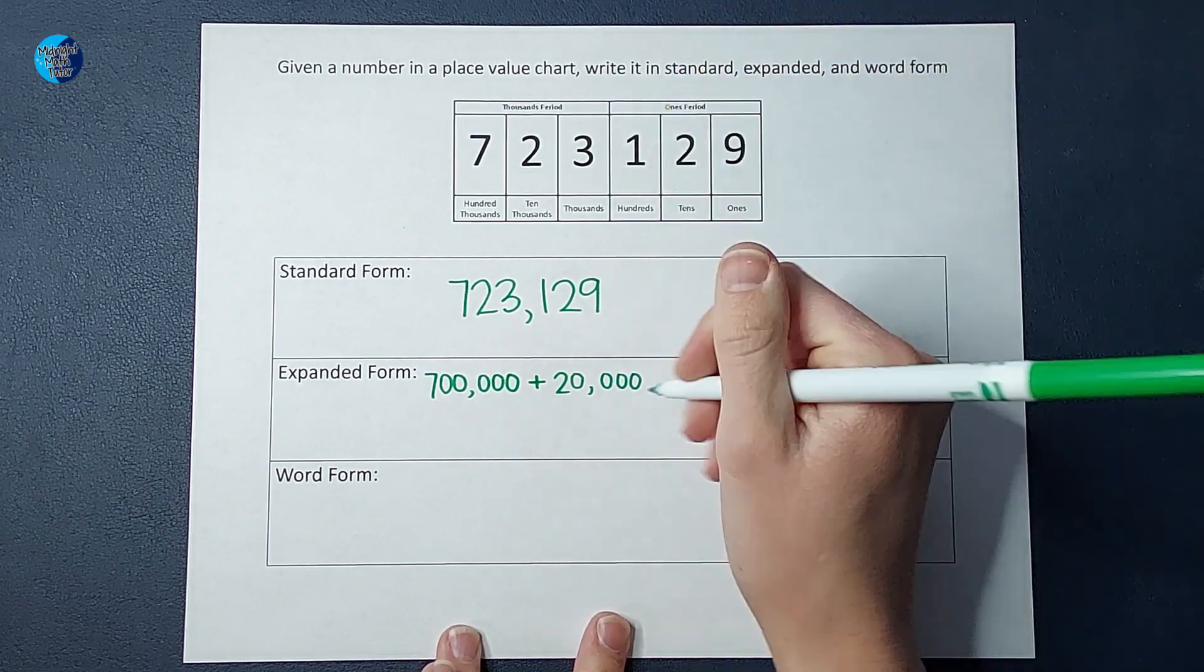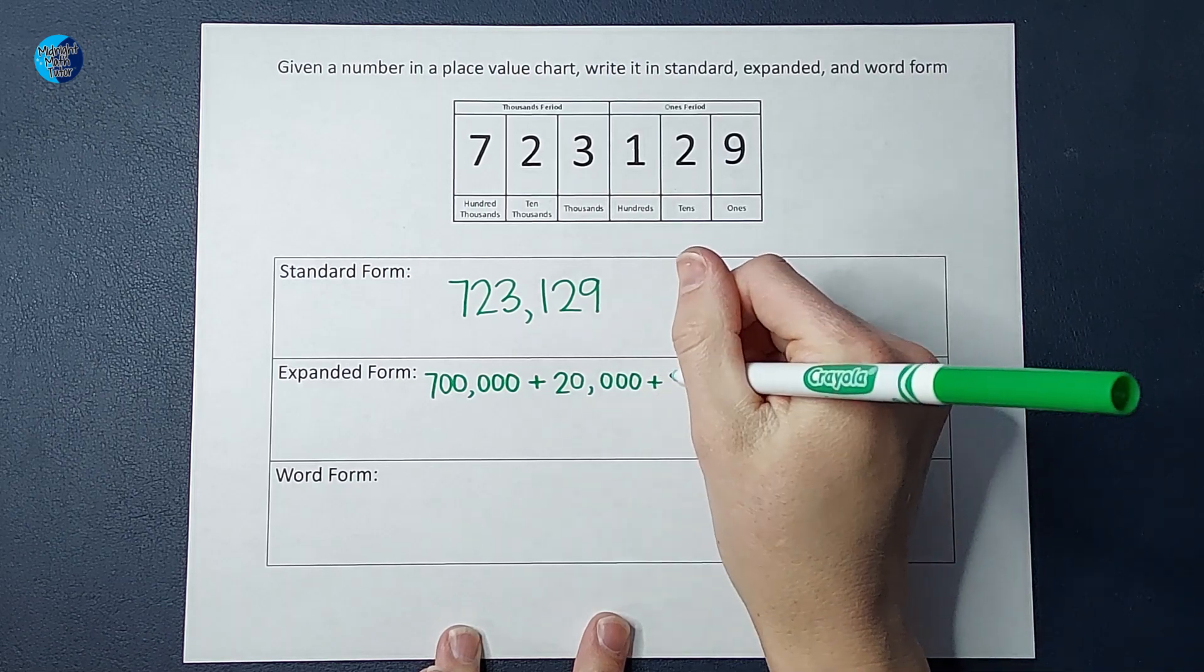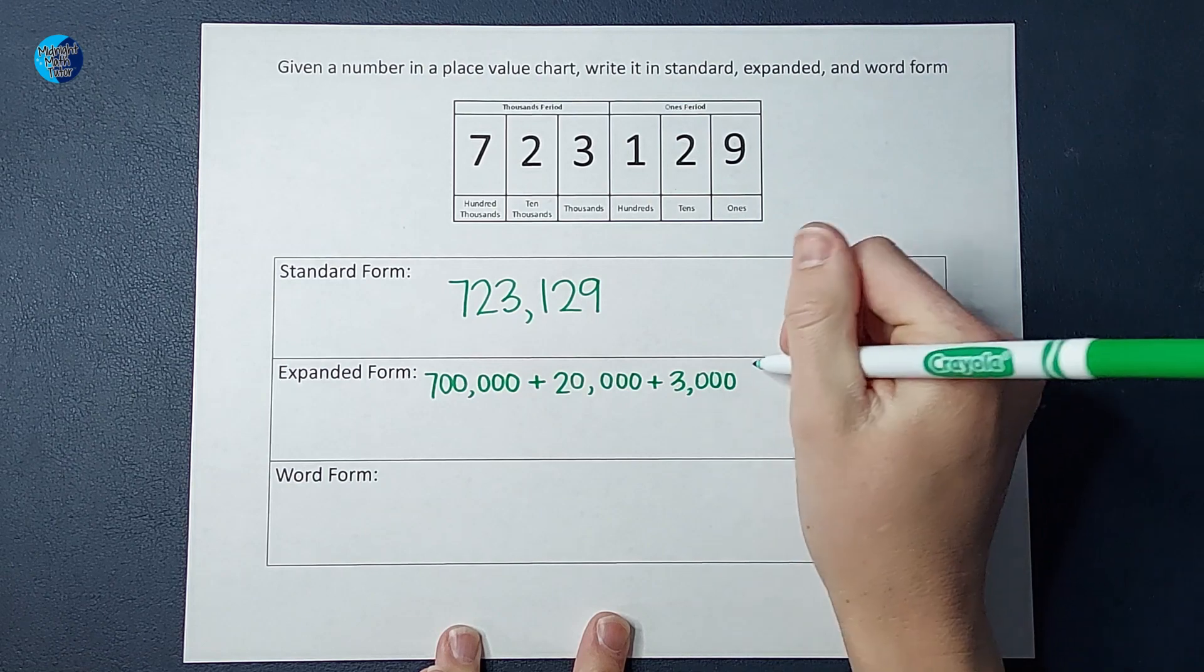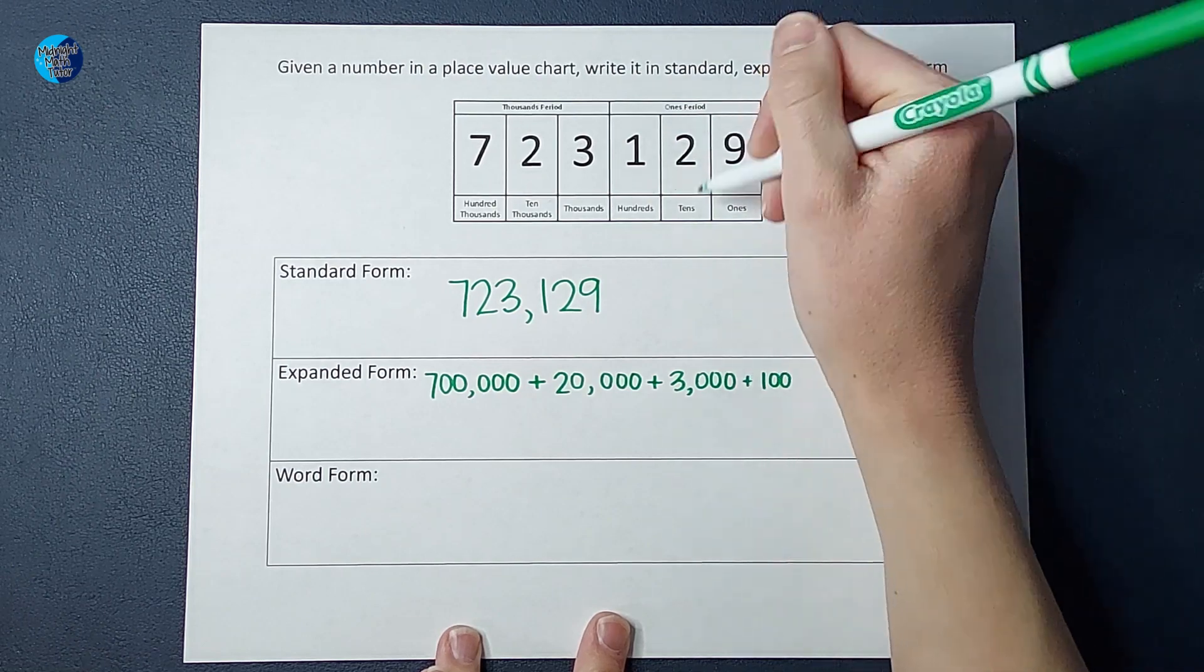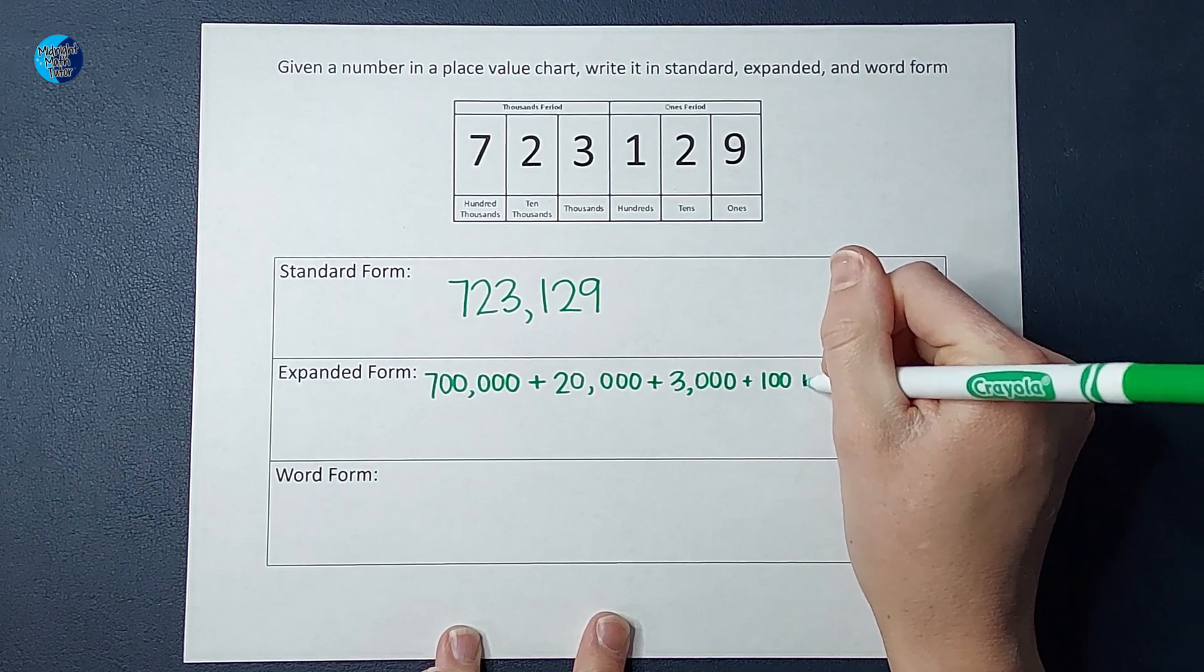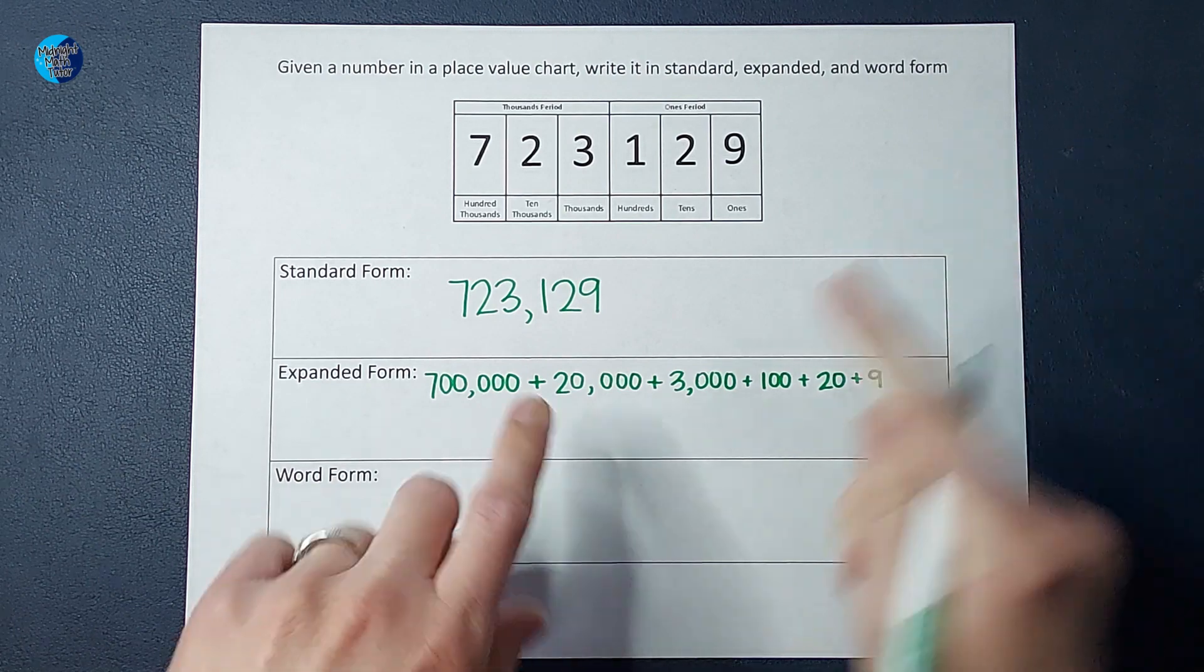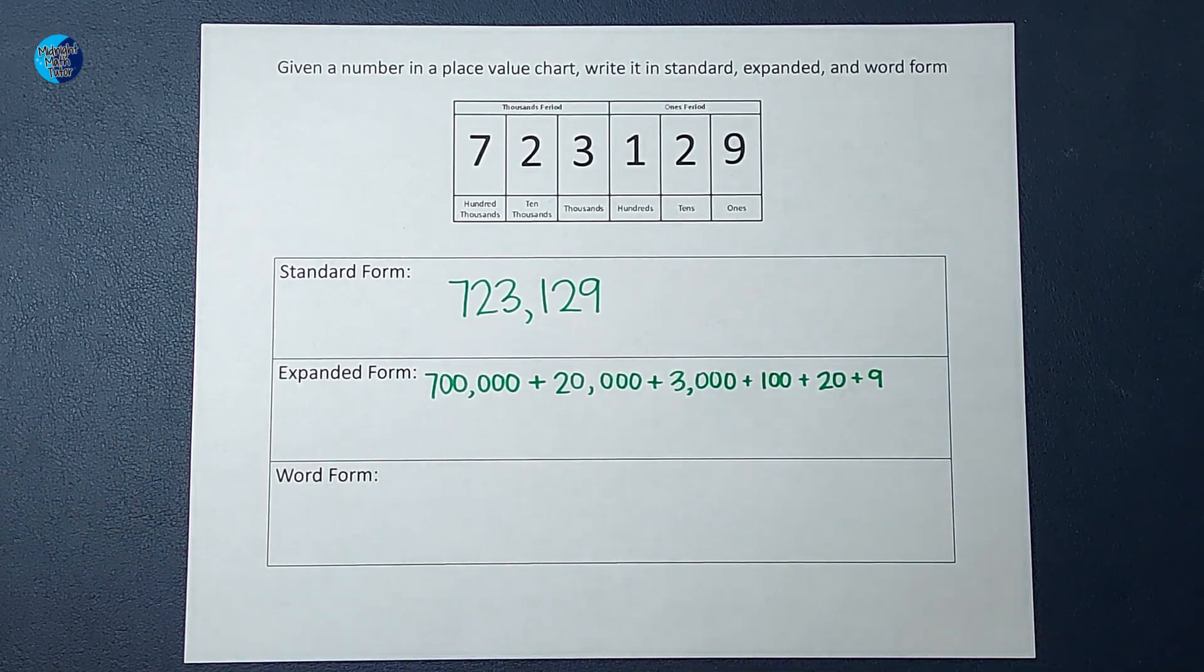This three means I have three 1,000s, which I would write as 3,000. This one means I have 100. The two means I have two 10s, which we write as 20, and nine 1s. That is expanded form. You're writing out each number according to its place value, adding them all together.